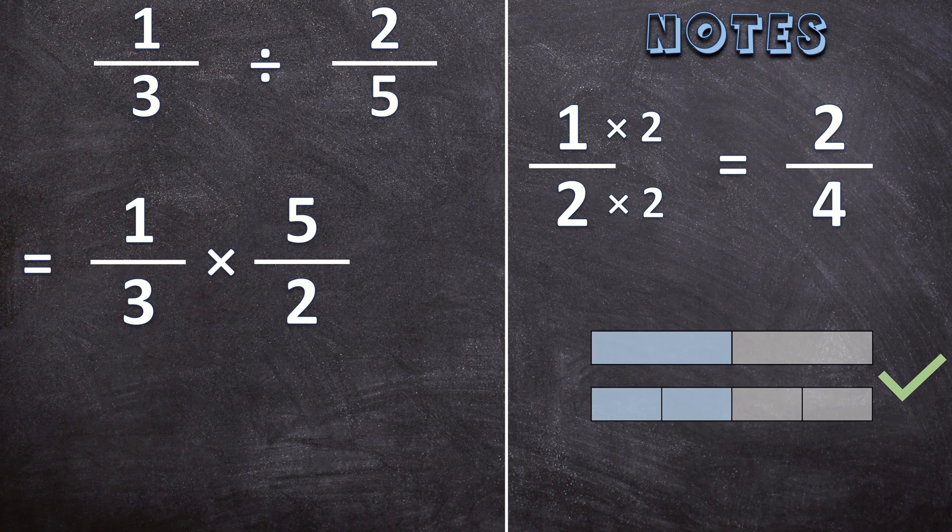So you don't have to go through all of these steps every time you divide by a fraction. But now you know why you can just change the division to multiplication and swap the second fraction around.